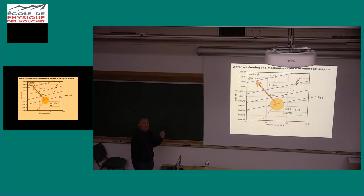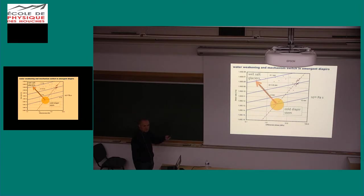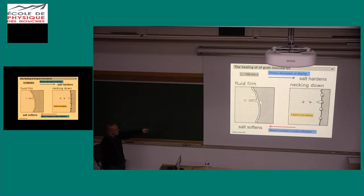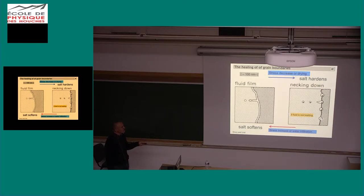We have these fluid films at the grain boundaries, pressure solution is activated by these fluid films, and we have a concept of recrystallization adjusting the grain size along the field boundary. But if you cycle the stress or change conditions, the salt is going to recrystallize and become much, much weaker. There is one additional complication: if you decrease the stress or dry out the salt, there is a thermodynamic driving force to make these fluids into small pockets because of interfacial tension, if the wetting angle is not very small.